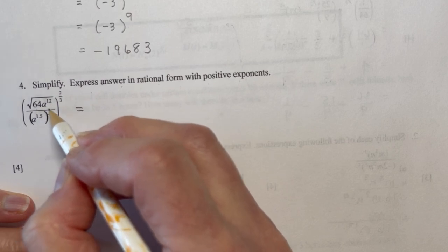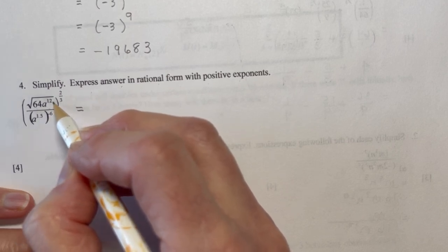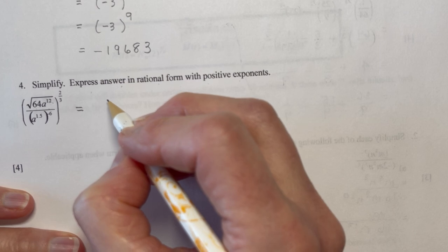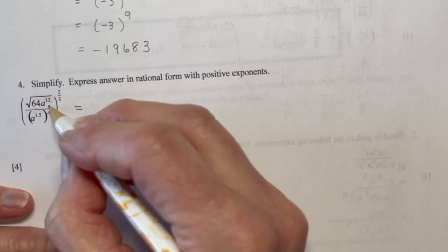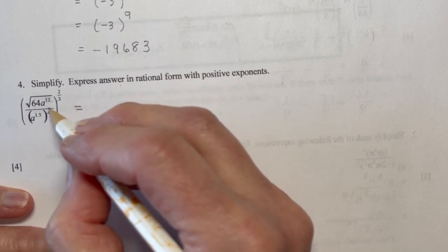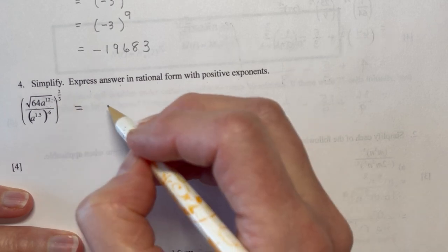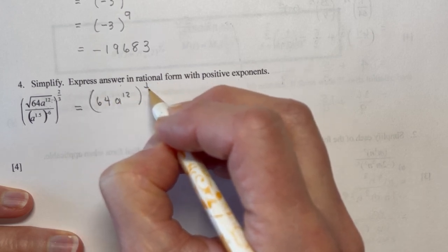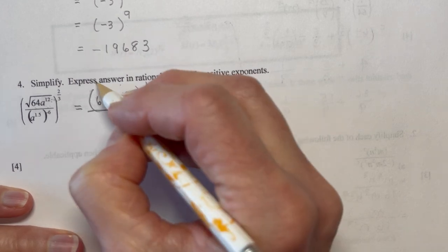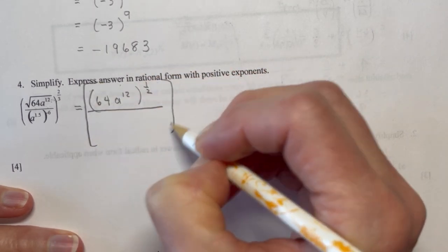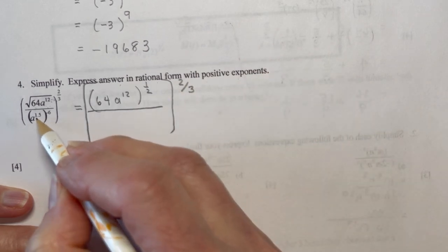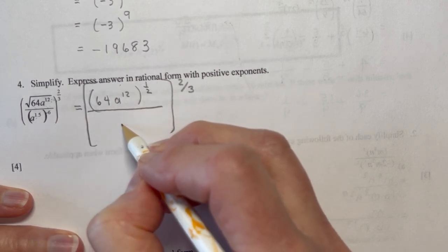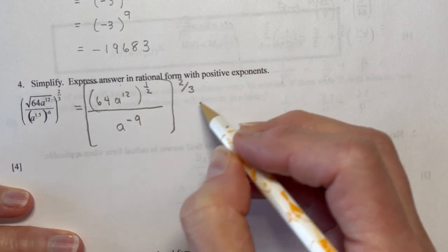So the square root of 64a to the 12. Now, you can write it like this, and I'll do that just because maybe it might help you to see what we've got here. So this 64a to the 12, you probably could evaluate that in your head, but I'll write it out like this first. a to the 12 to the half power. And down here, and don't forget we've got a big bracket here, and still to the 2 thirds. And in the denominator, 1.5 times 6 is, or minus 6 is minus 9. So I have a to the minus 9, now all still to the 2 thirds.